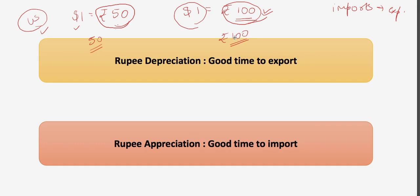So in this case, imports will be expensive. And if we talk about exports, then if you were exporting a watch, earlier you were getting rupees 50, but now after the depreciation for the same watch exported at the same price of dollar one, you are able to get rupees 100.